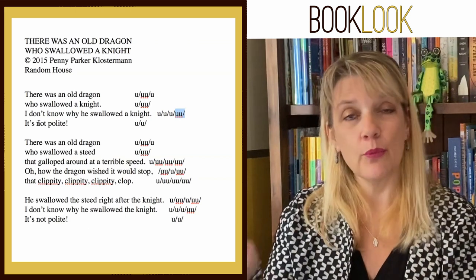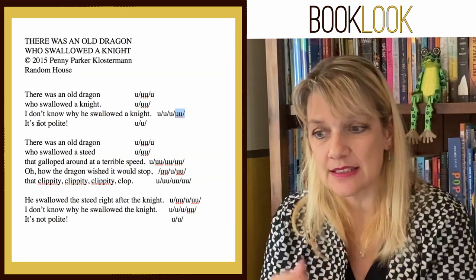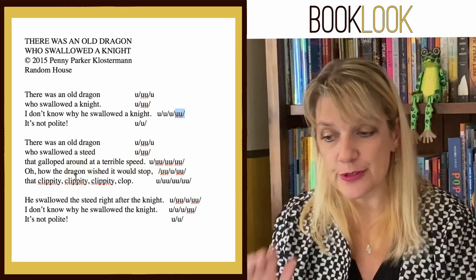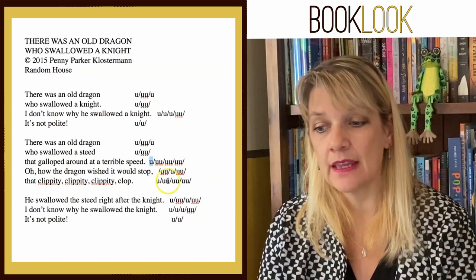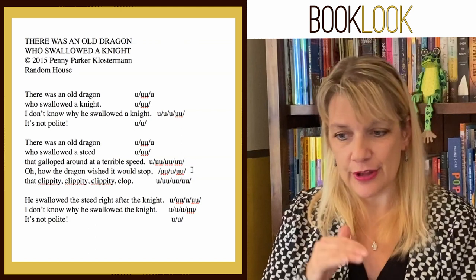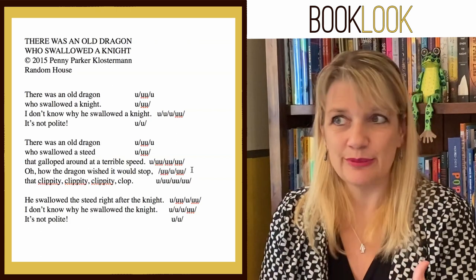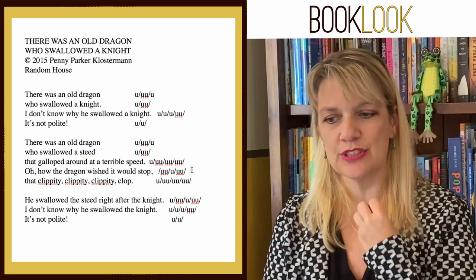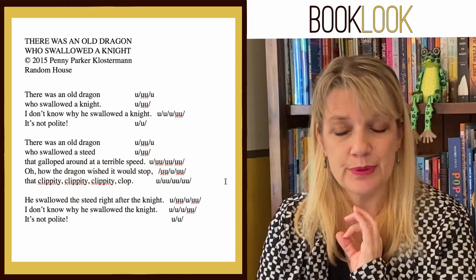Moving to the next stanza — it goes back to anapestic with slight variations: 'There was an old dragon who swallowed a steed,' same as before, anapestic tetrameter. 'That galloped around at a terrible speed' — again, half headless, missing that first unstressed beat. Then we have a little variation with 'Oh,' the interjection. 'Oh, how the dragon wished it would stop' — you hear that little drag on 'dragon'? There's a cesura there: we're missing an unstressed beat, so there's a little pause mid-line. A cesura is a little pause in the middle of a line, often set apart with a comma or dash — in this case it just happens naturally.